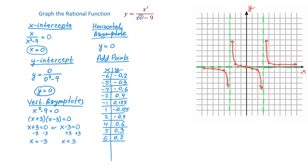So we finished graphing the rational function y equals x over x squared minus 9. I hope you enjoyed this video — check more lessons and videos at themathdistrict.com. Thank you!